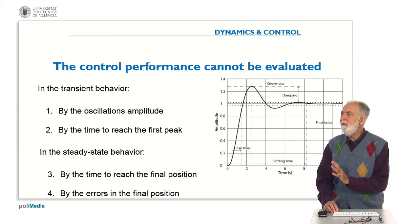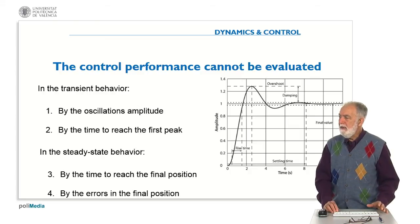So, in the graphic, we have the transient response of a system, a control system, when we apply a step in the reference. And we have, as we said, two periods, the transient behavior and the steady state behavior.